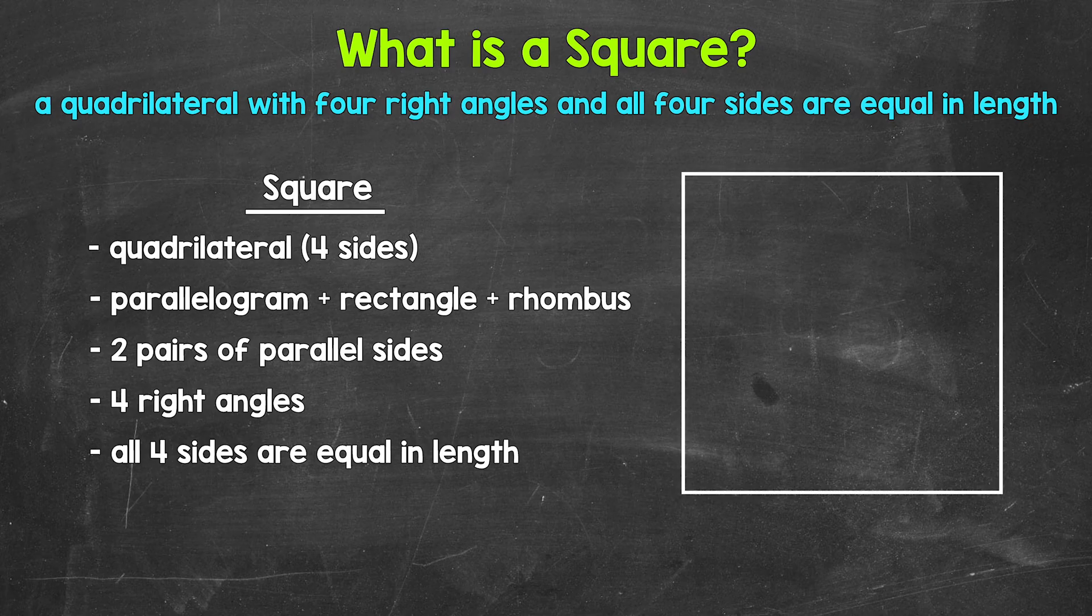Now simply put, a square is a quadrilateral with four right angles, and all four sides are equal in length. But let's dive in a little further.